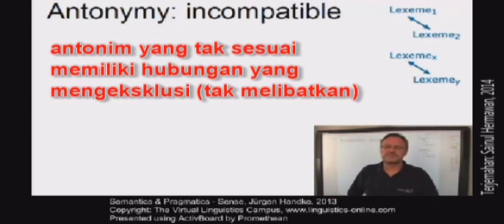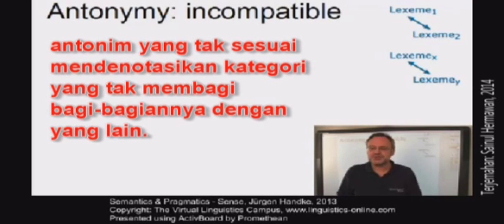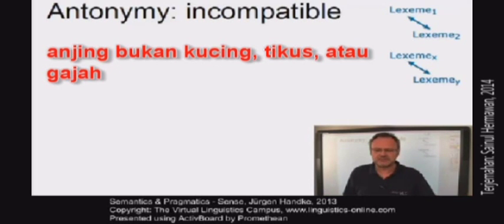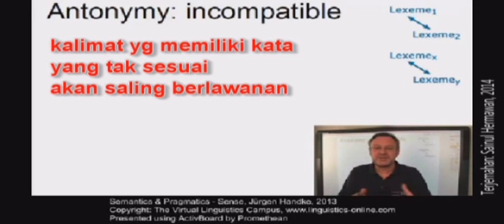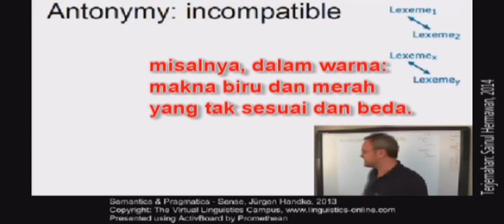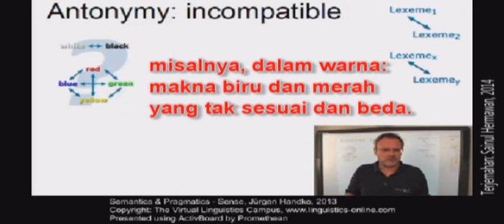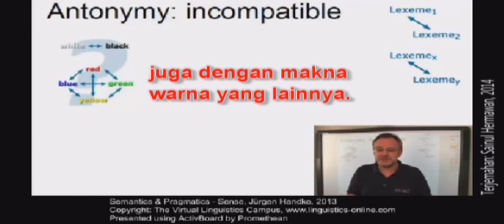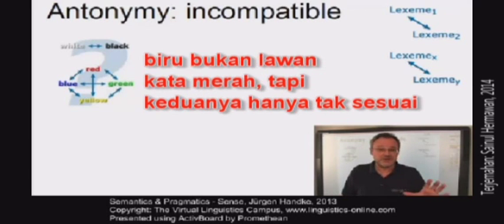Incompatibility. Another type of antonyms can be thought of as a relation of exclusion. Incompatibles are terms which denote categories which share no members. If something is a dog, then it is not a cat, a mouse or an elephant. Sentences with incompatible terms will thus contradict each other. A well-known example is the set of colour terms, where the meaning of blue is incompatible with the meaning of red as well as with the meanings of the other colour terms. It should be noted that incompatibility does not necessarily imply oppositeness of meaning. Red is not the opposite of blue — it's just incompatible with it.